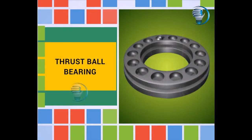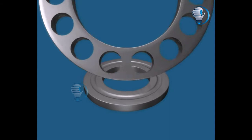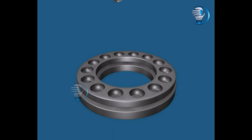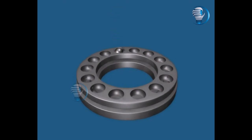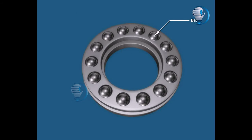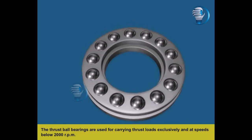Thrust ball bearing: outer race, inner race, ball. The thrust ball bearings are used for carrying thrust loads exclusively and at speeds below 2000 rpm.